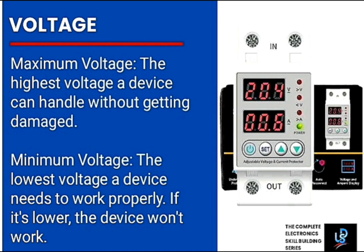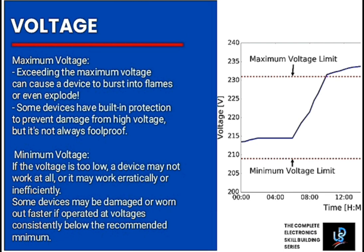If it's lower, the device won't work. That is to say, exceeding the maximum voltage can cause a device to burst into flames or even explode. Some devices have built-in protection to prevent damage from high voltage but it's not always foolproof. If the voltage is too low, a device may not work at all, or it may work erratically or inefficiently. Some devices may be damaged or worn out faster if operated at voltages consistently below the recommended minimum.